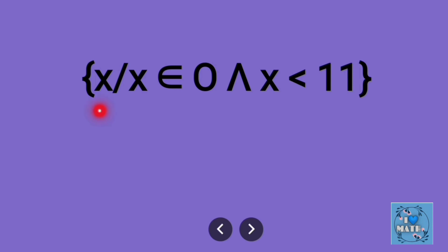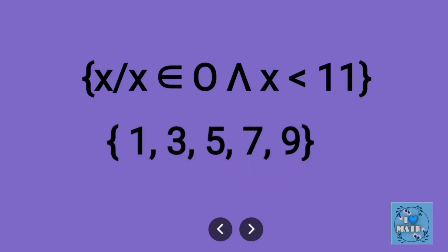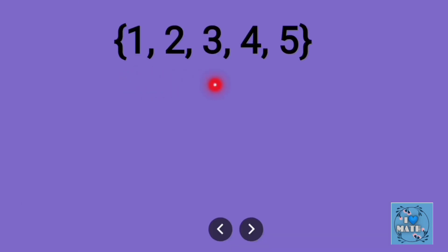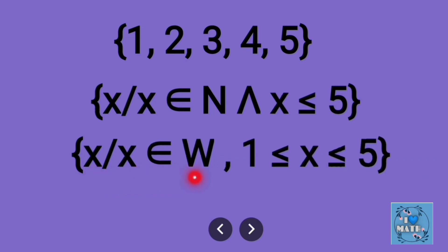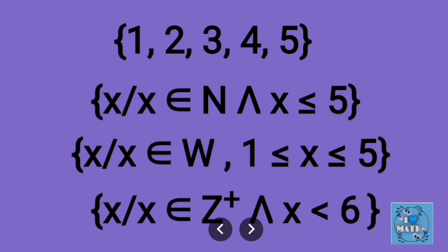Example: { x | x ∈ O, x < 11 } — these are the odd numbers less than 11: 1, 3, 5, 7, 9. If we convert this tabular form into set builder form, we can write it as { x | x ∈ N, x ≤ 5 }, or { x | x ∈ W, 1 ≤ x ≤ 5 } for whole numbers from 1 to 5, or { x | x ∈ Z⁺, x < 6 } for positive integers. We can write all three forms for the given set.